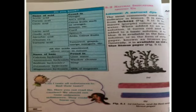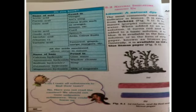Name of acids: Acetic acid, found in vinegar. Formic acid, found in ant sting. Citric acid, found in citrus fruits. Lactic acid, found in curd. Oxalic acid, found in spinach. Ascorbic acid, found in amla or citrus fruits — this is also known as Vitamin C. Tartaric acid, found in tamarind, grapes, and unripe mangoes.